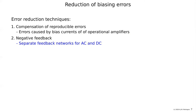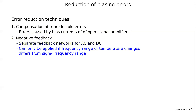We can apply negative feedback separately: one for very low frequencies (biasing), and another negative feedback for the frequency range of interest, which is basically the amplifier we already designed. So if the frequency range of temperature changes differs from the signal frequency range, we can do these kinds of things.